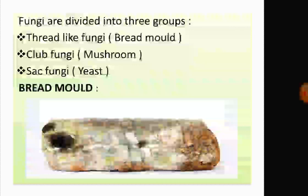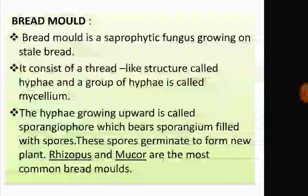Fungi are divided into three groups: thread-like fungi also called bread mold, club fungi such as mushroom, and sac fungi such as yeast. Bread mold is a saprophytic fungus growing on stale bread. Sometimes you can see this type of fungus growing on old pickles, vegetables, or fruits.